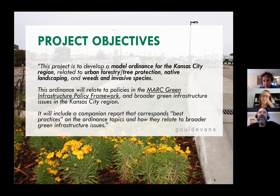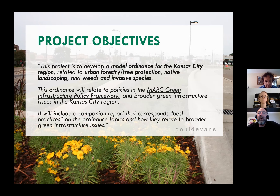I want to set the table a little bit and talk about the overall project objectives. The idea is to develop a model ordinance for the Kansas City region related to urban forestry, tree protection, native landscaping, and weeds and invasive species — a tall order with lots of really meaty, timely stuff. This is also related to and descending from MARC's green infrastructure policy framework that Tom just talked about. We'll try to keep this presentation focused on the near-term goals of the forestry, tree, and landscaping ordinances, while also tying things back to the broader benefits of green infrastructure through regulations.